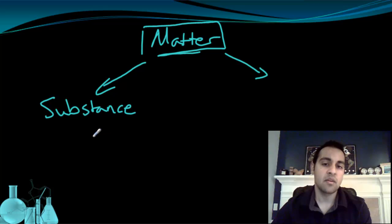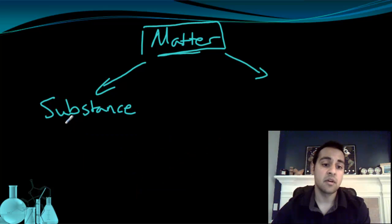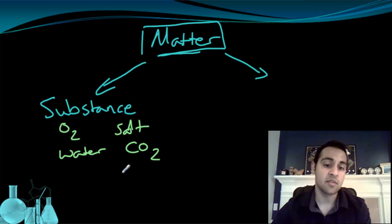We use the term substance a lot in the last video, and it's going to be helpful for us to get a more formal definition. A substance is any matter that has a fixed composition and is uniform. So it has to have both those two things: a fixed composition and is uniform. So let's look at some examples. Oxygen gas is a pure substance. Water is a pure substance. Salt is an example of a pure substance. Carbon dioxide, CO2, is an example of a pure substance.